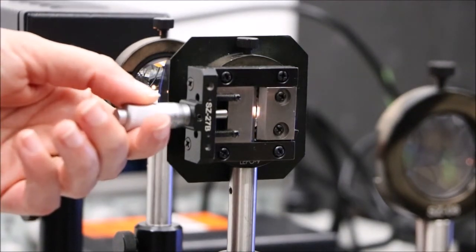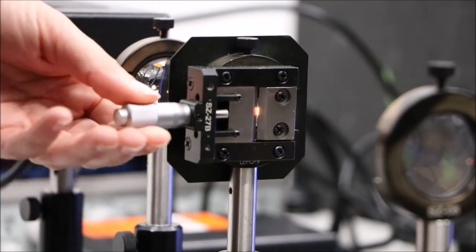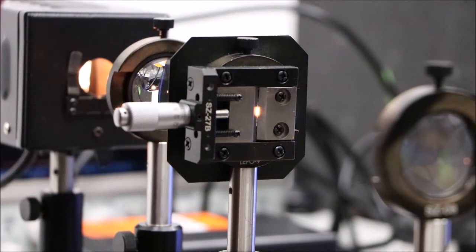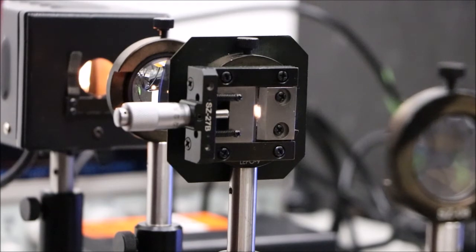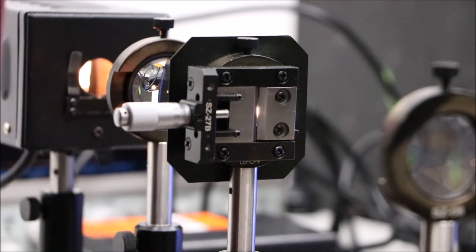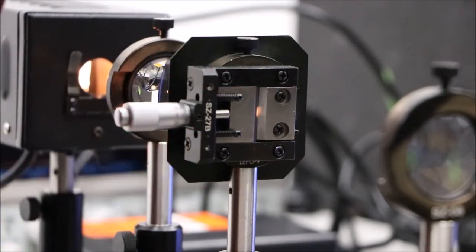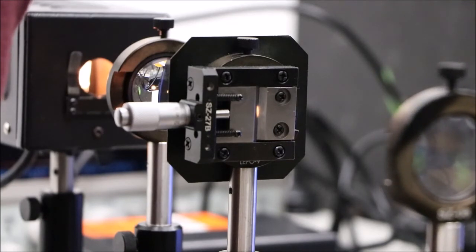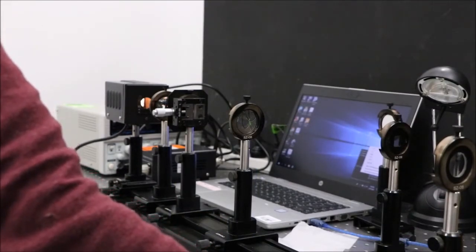We'll narrow the slit and repeat the autocollimation until the line is as narrow as possible. Now we'll slide the screen along the rail so the image of the slit on the screen is focused.